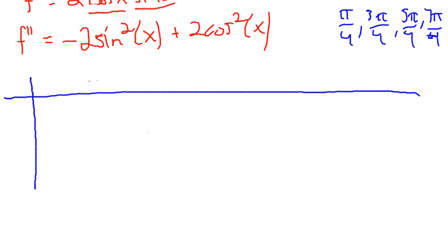I've rewritten f prime so that I can plug in those values. So I need to plug in values in between them, and it's easier to see sine squared or cosine squared like that. So I need to take my different x values and figure out what f double prime is.